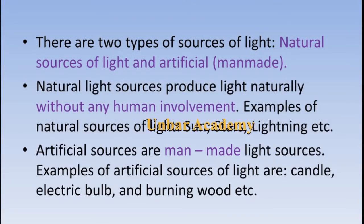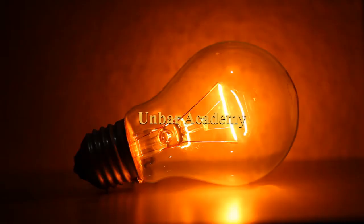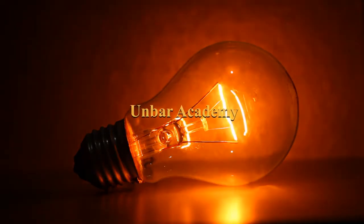Artificial sources are man-made light sources. Examples of artificial sources of light are a candle, a bulb, and burning wood.